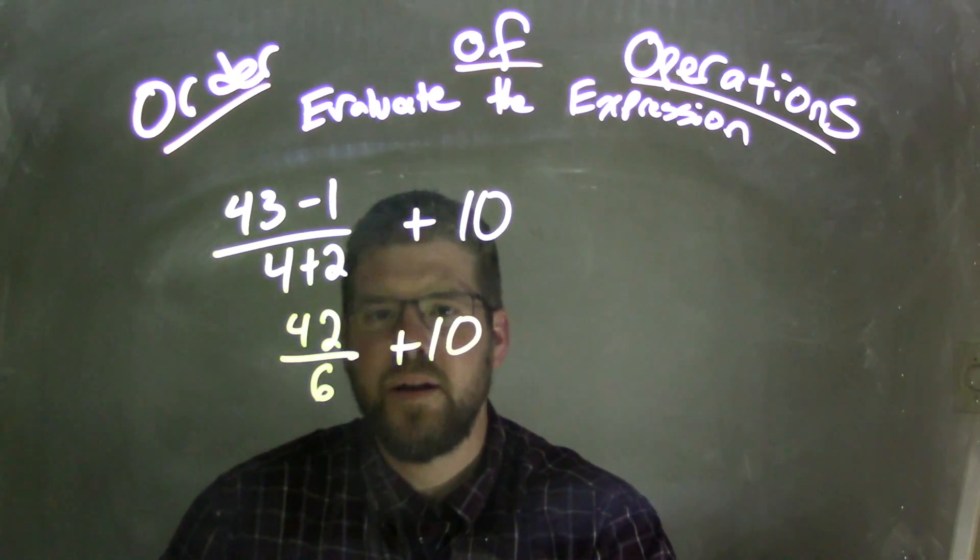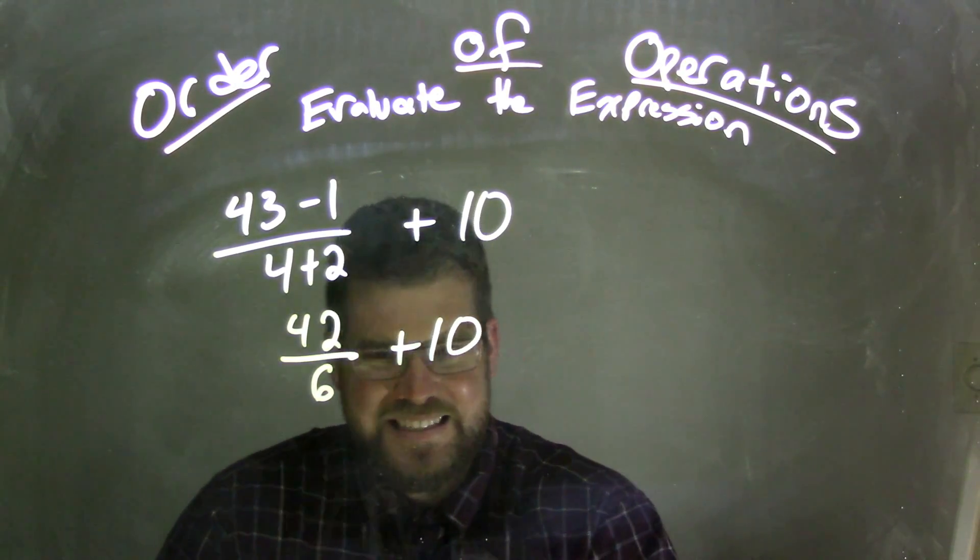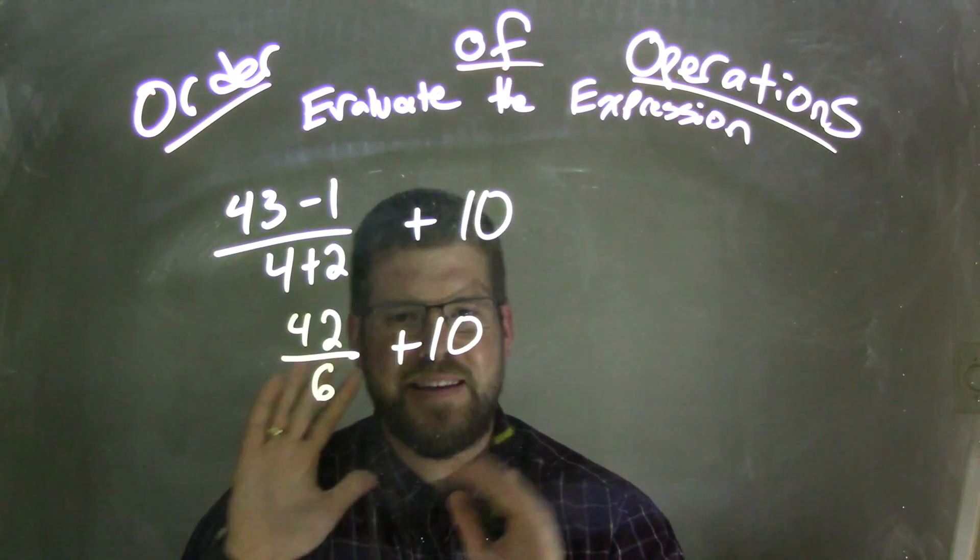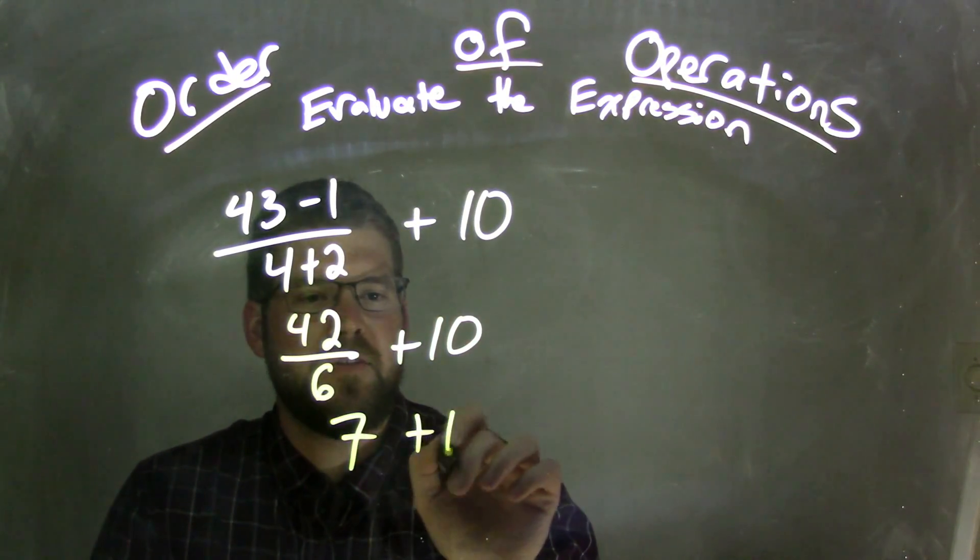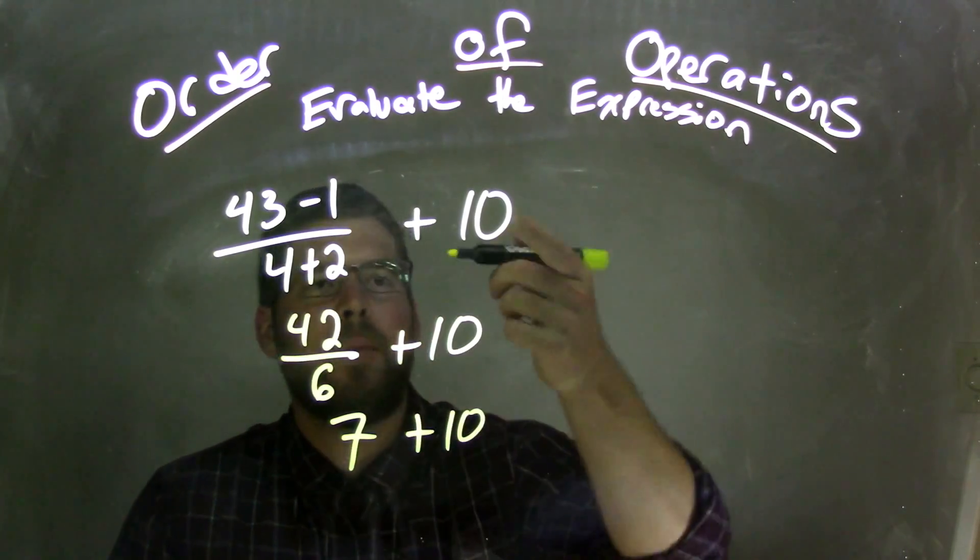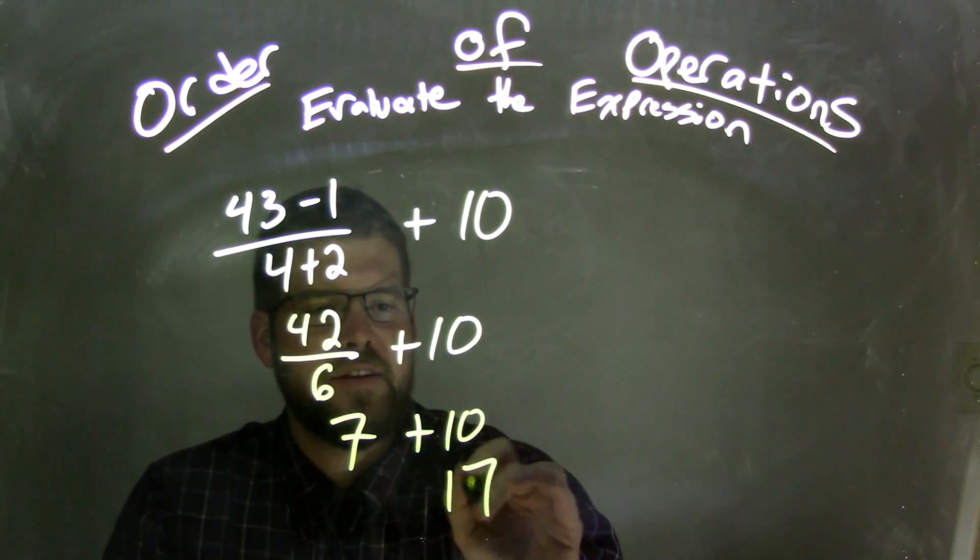So what does 42 divided by 6 come out to be? So now we have to deal with that first. So 42 divided by 6 is 7 plus 10, right? Bring down that 10, and 7 plus 10 is 17.